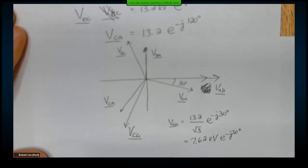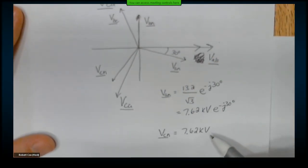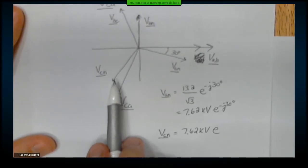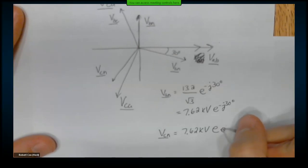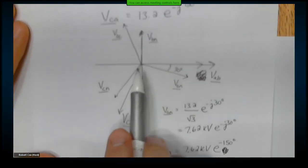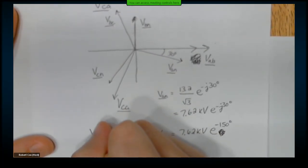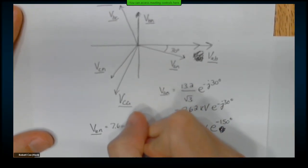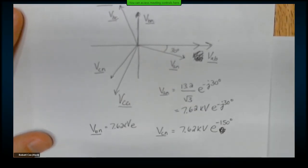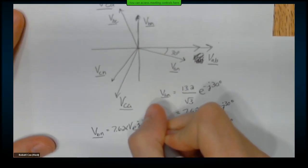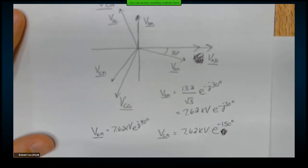According to this, VCN is at 13.2 — same magnitude, 7.62 kV. He looks like he's 30 degrees behind this guy, so that puts him at negative 150 degrees. If VCA was minus 120, that puts him at minus 150, which is 30 degrees behind. VBN, on the other hand, has the same magnitude, 7.62 kV. He's 30 degrees behind this guy, so that puts him at 90 degrees. So my VAN is that.